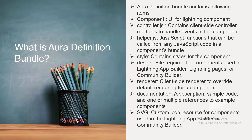The bundle also contains: Style (CSS for the component), Design (required for components used in Lightning App Builder, Lightning pages, or Community Builder), Renderer (client-side renderer to override default rendering for a component), Documentation (description, sample code, and references to example components), and SVG (custom icon resource for components used in Lightning App Builder or Community Builder).